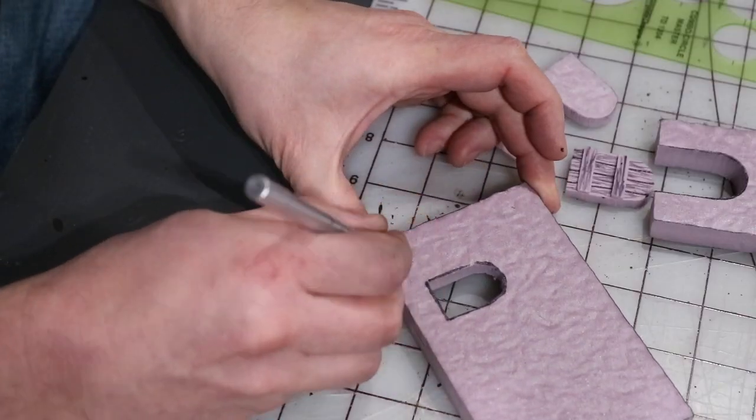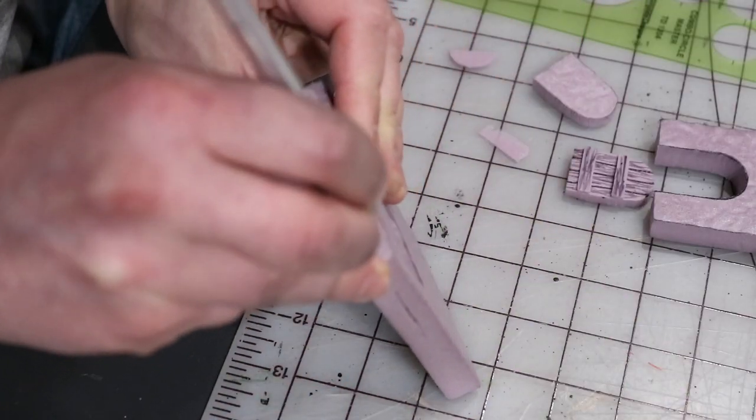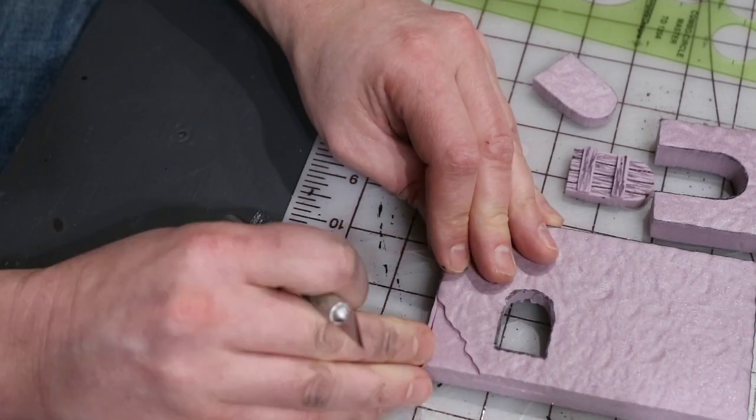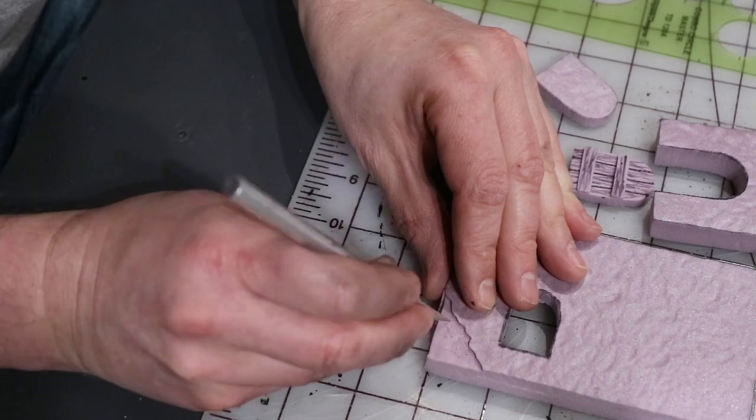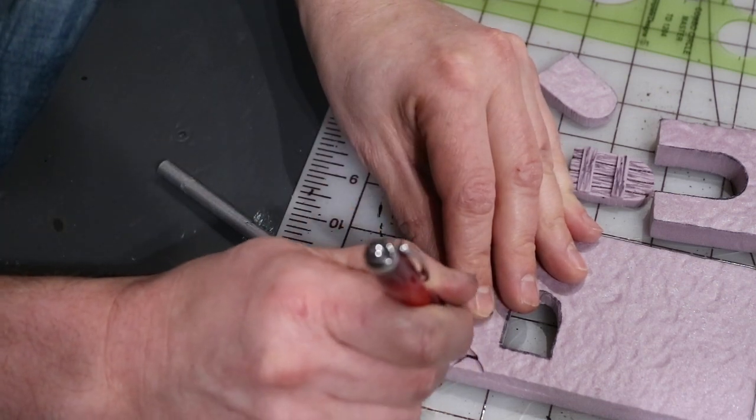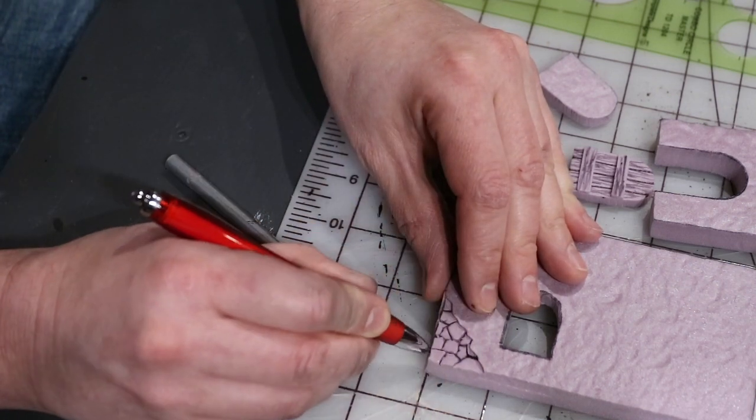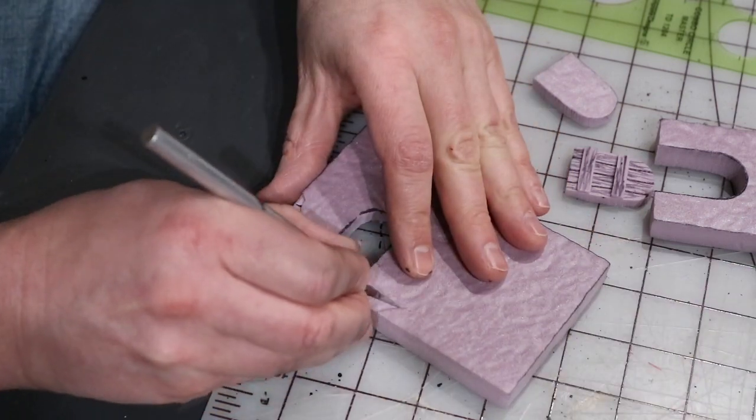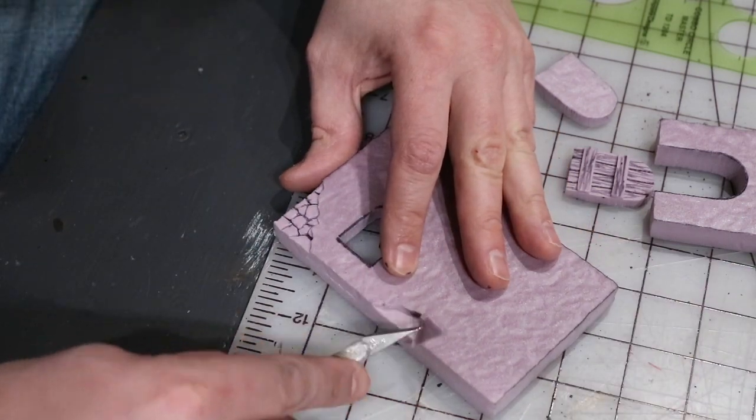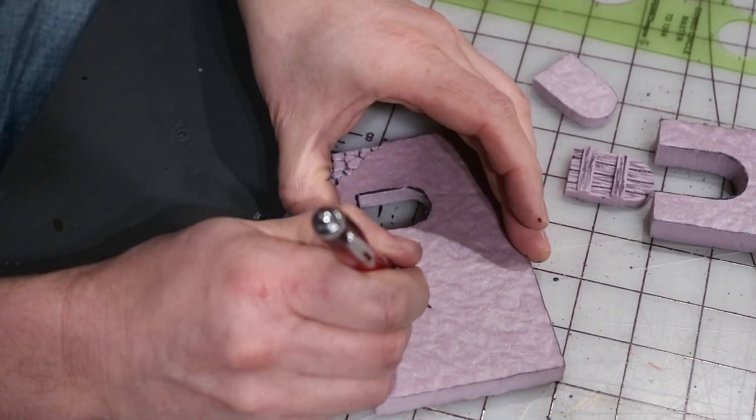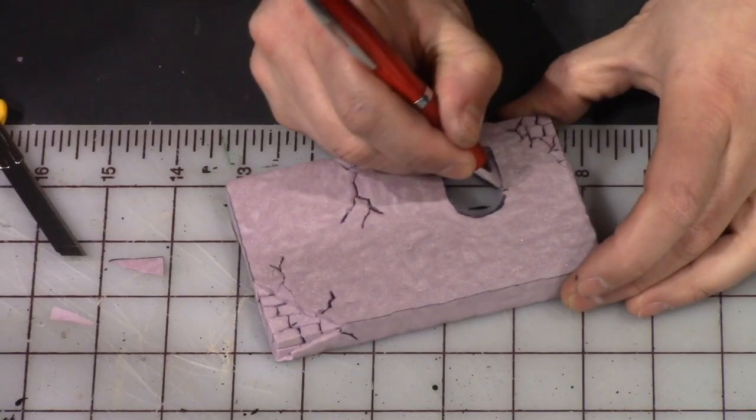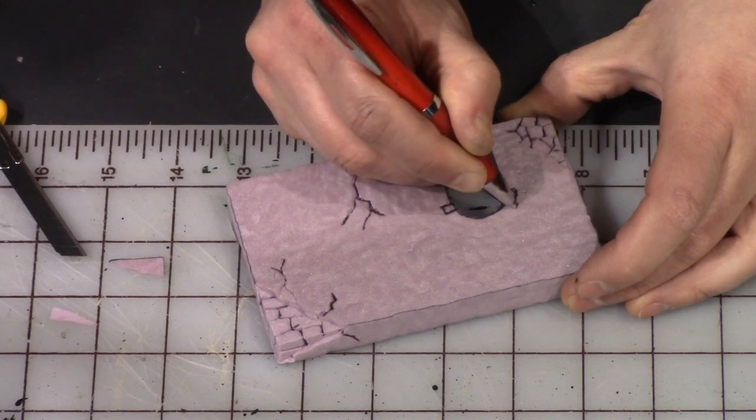And then I'm using the exacto knife to cut in some relief sections of where the stucco would have fallen away from the brickwork or stonework. Using the exacto to cut in the stonework and then using a ballpoint pen to increase the texture of each of those sections. Going around and adding that detail to all of the different exterior parts.